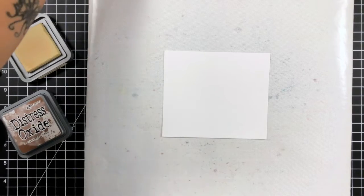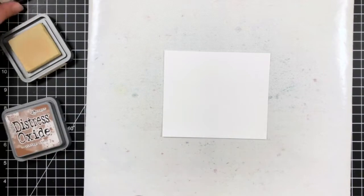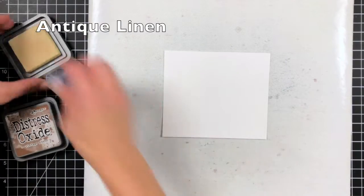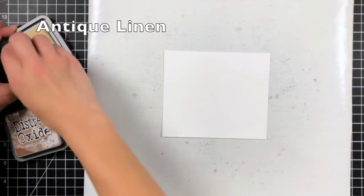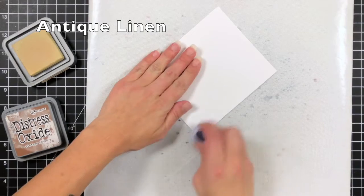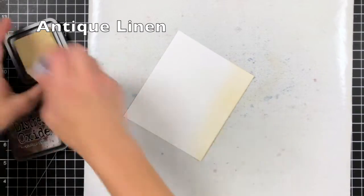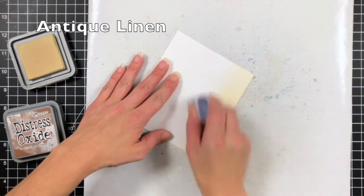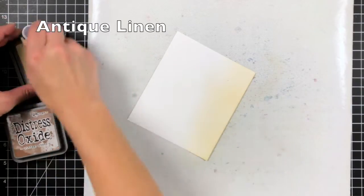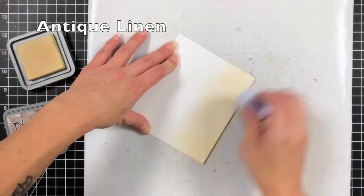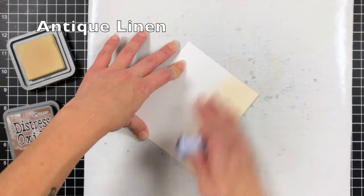So I'm going to start by creating the bottom of my sea or ocean, I'm going to create that sand at the bottom. I'm starting off with some antique linen. I am using some Bristol smooth cardstock and it is trimmed to four and a quarter by five and a half. I'm not going to use the entire piece, I'm actually going to be die cutting waves from this but I did want to start with the ink blending first before I did any die cutting.